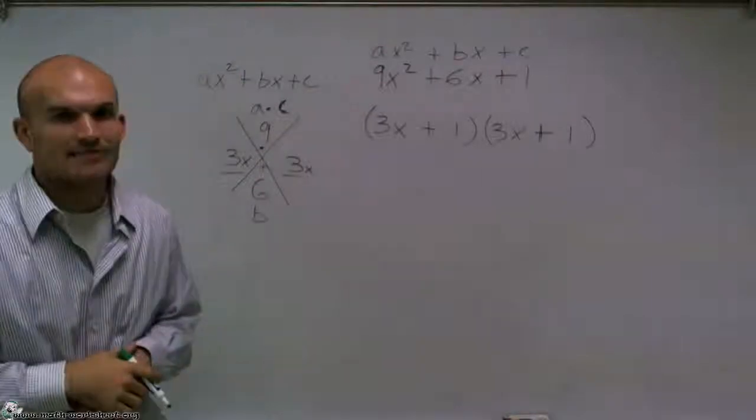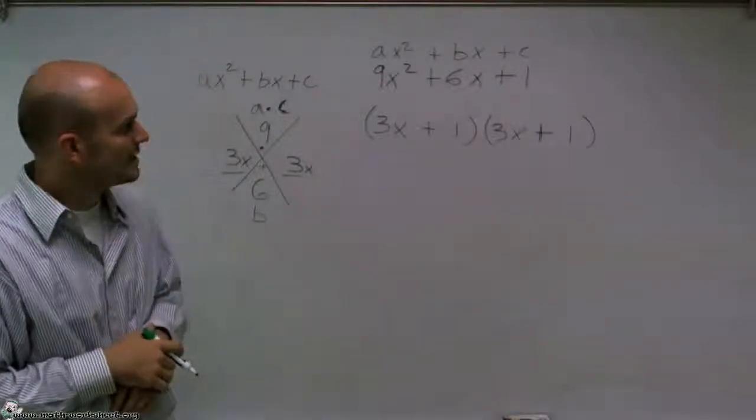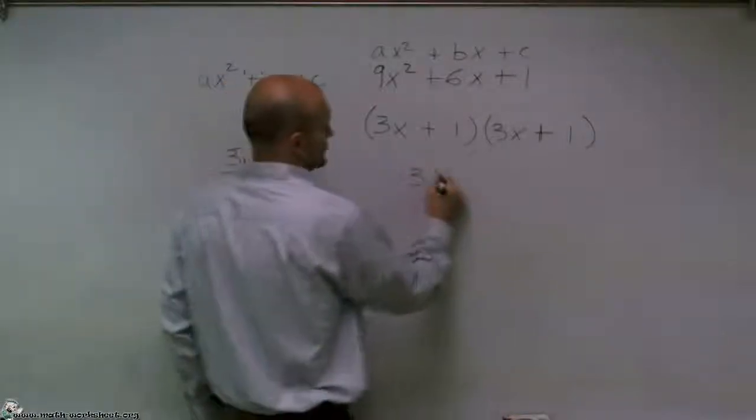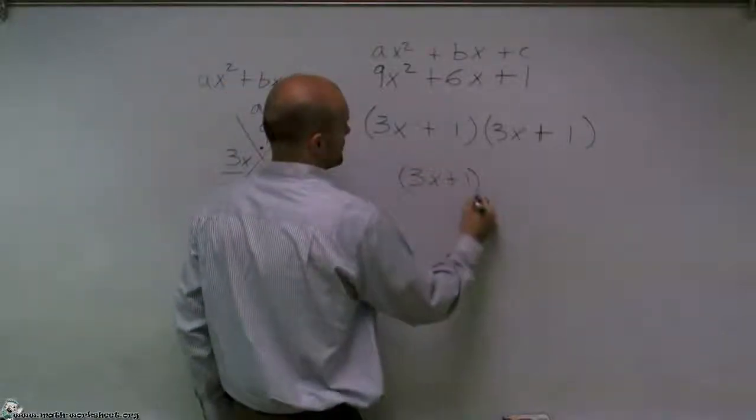So what I notice is I have 3x plus 1 times 3x plus 1, which reduces down to (3x + 1)².